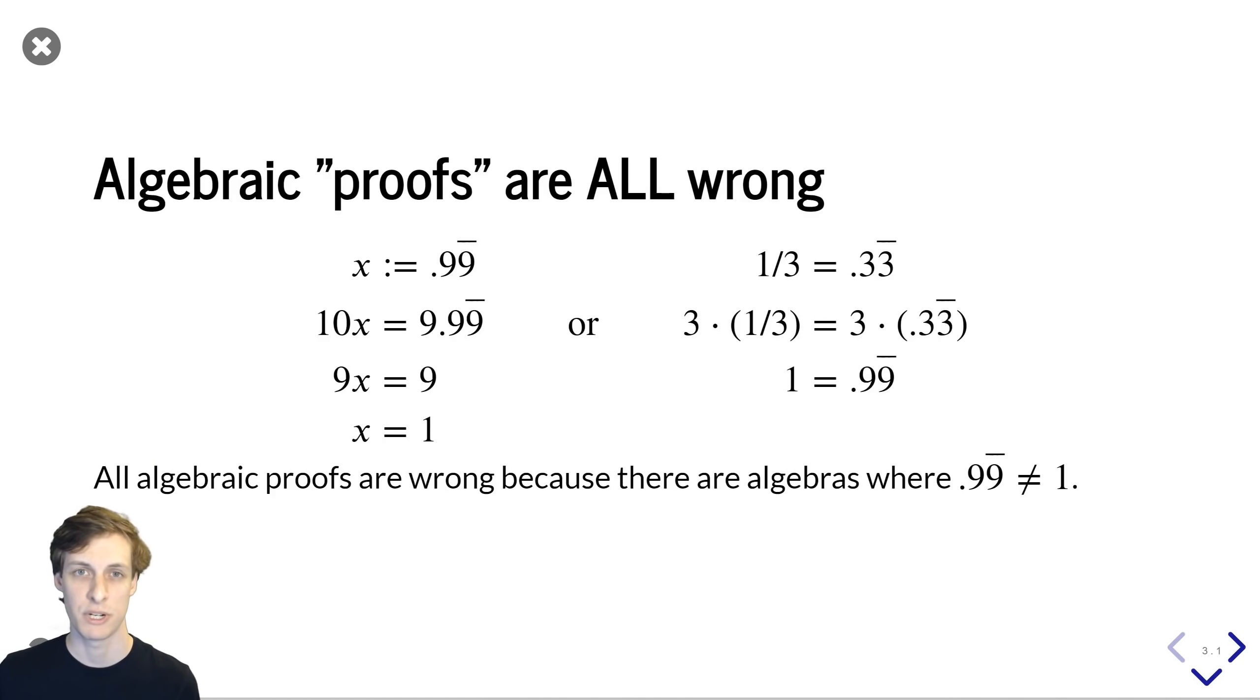The vast majority of proofs that 0.99 repeating equals 1 are so-called algebraic proofs. They start with some number, they do some algebraic manipulations, and then they somehow derive that 1 is equal to 0.99 repeating from that. These are by far the most common kind of proof that you'll see when you look it up. And at a first glance, they look pretty sensible.